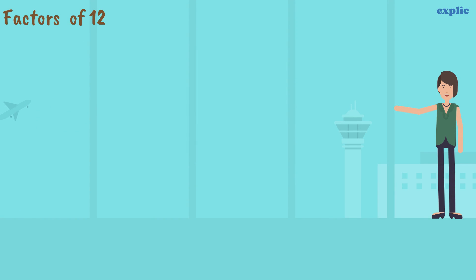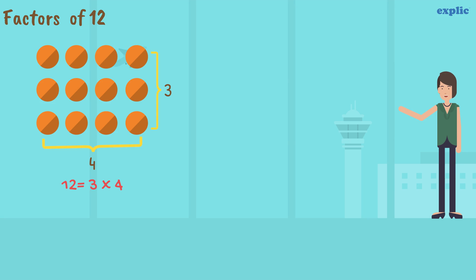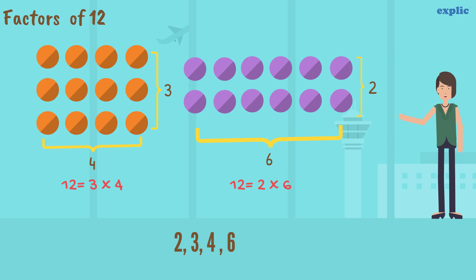A number can be written as a product of 2 numbers in different ways. For example, 12 can be expressed as 3 multiply by 4 and 2 multiply by 6. Hence 2, 3, 4 and 6 are factors of 12.